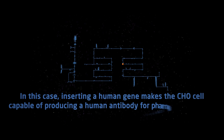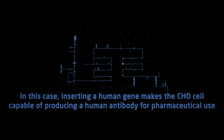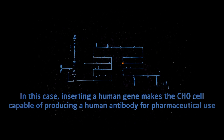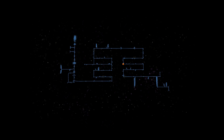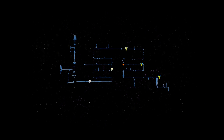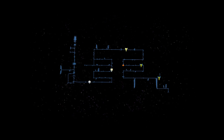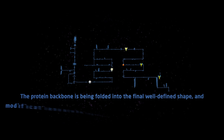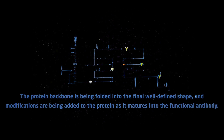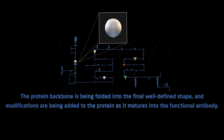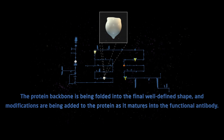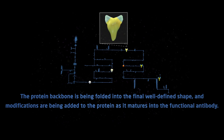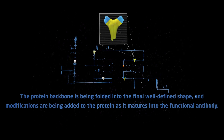Inserting a human gene makes the CHO cell capable of producing a human antibody for pharmaceutical use. The protein backbone is being folded into the final well-defined shape, and modifications are being added to the protein as it matures into the functional antibody.